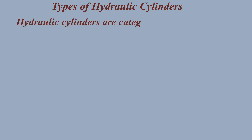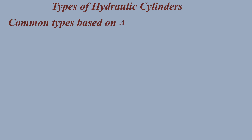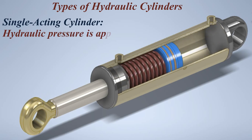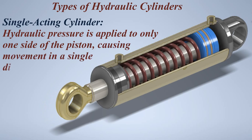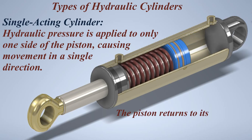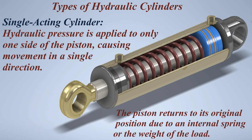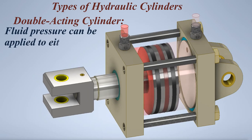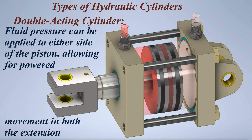Types of hydraulic cylinders. Hydraulic cylinders are categorized by their action, construction, and application. Common types based on action: single acting cylinder — hydraulic pressure is applied to only one side of the piston, causing movement in a single direction; the piston returns to its original position due to an internal spring or the weight of the load. Double acting cylinder — fluid pressure can be applied to either side of the piston, allowing for powered movement in both the extension and retraction strokes.